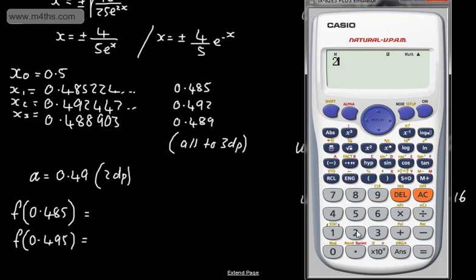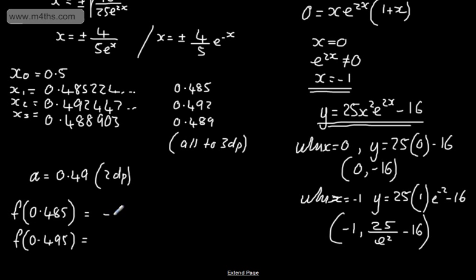What I'm going to do is set this up. We're going to have 25, then 0.485 squared, then e to the 2 times 0.485, then subtract 16. Let me check we've got that. We need e to the two lots, so let's change that over. That looks better. We've got 0.48..., which is negative.